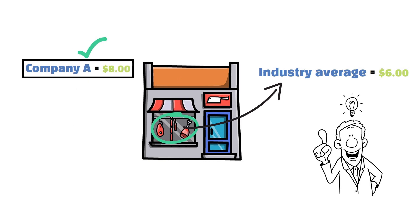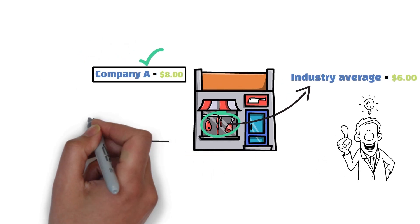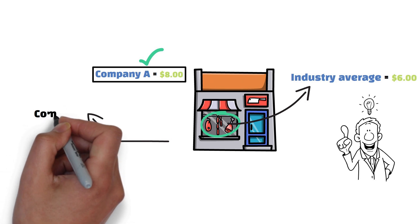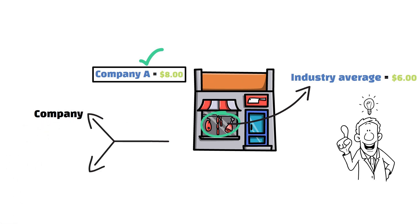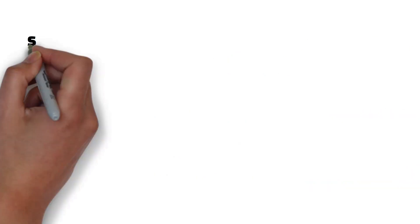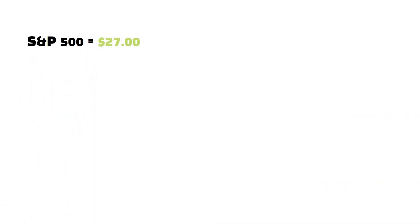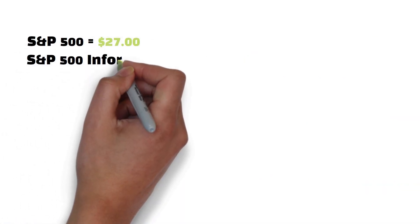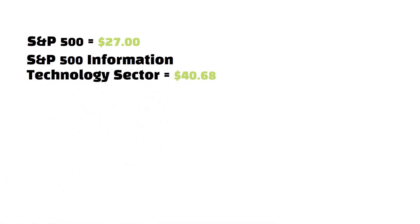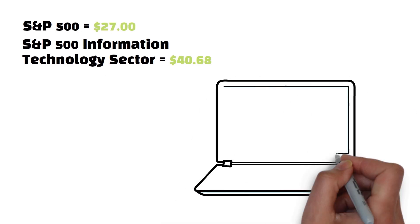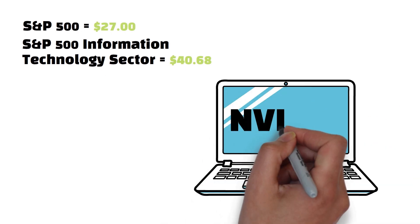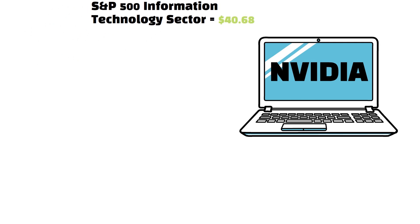However, maybe the beef is priced more because of superior quality. Similarly, when analyzing stocks, you should compare the P-E ratio of a company to its industry group. The S&P 500 P-E ratio is around 27. However, the estimated P-E ratio for the S&P 500 information technology sector is 40.68. This clearly illustrates how highly valued NVIDIA is in the current market.